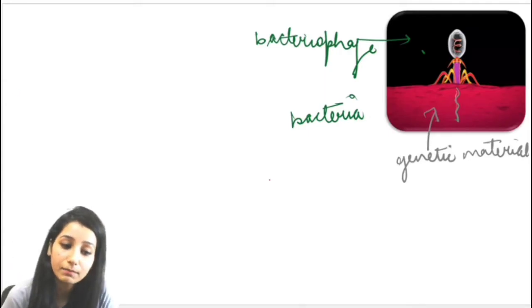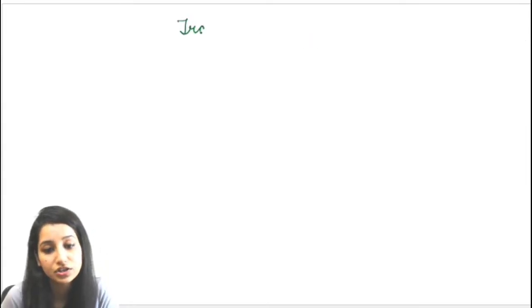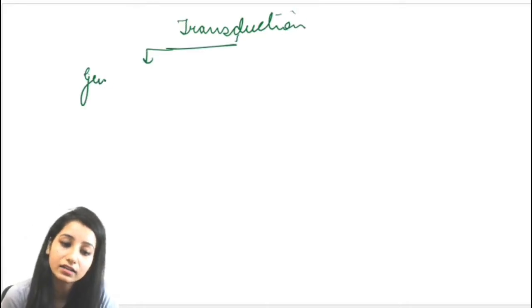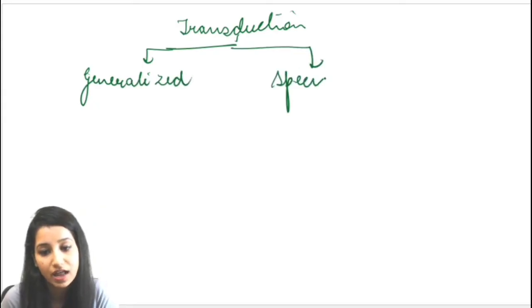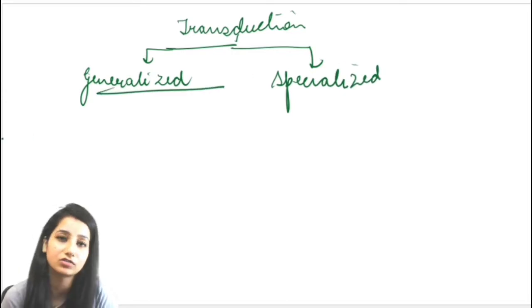Transduction is of two types. One is known as generalized transduction, and the other is known as specialized transduction. Let's first look at generalized transduction.